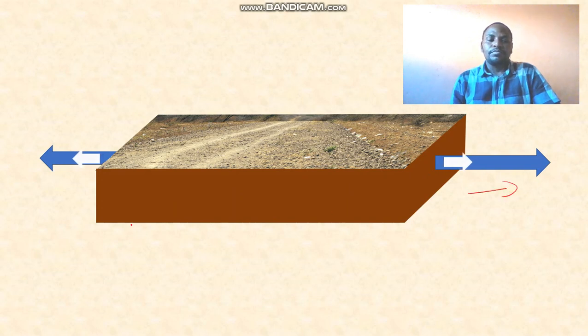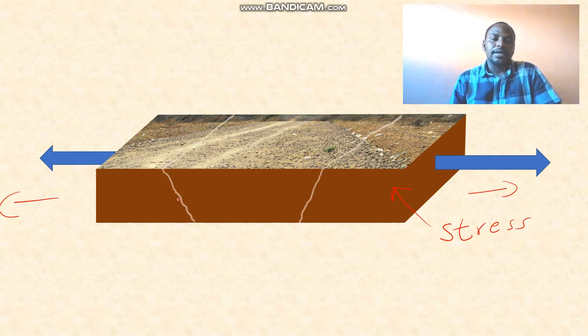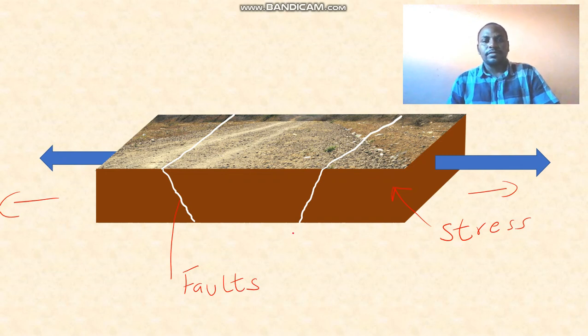As these forces move the crustal rocks sideways, they develop stress within the rocks and this stress leads to cracking of the rocks. This forms some lines of weakness known as faults, basically fault lines.